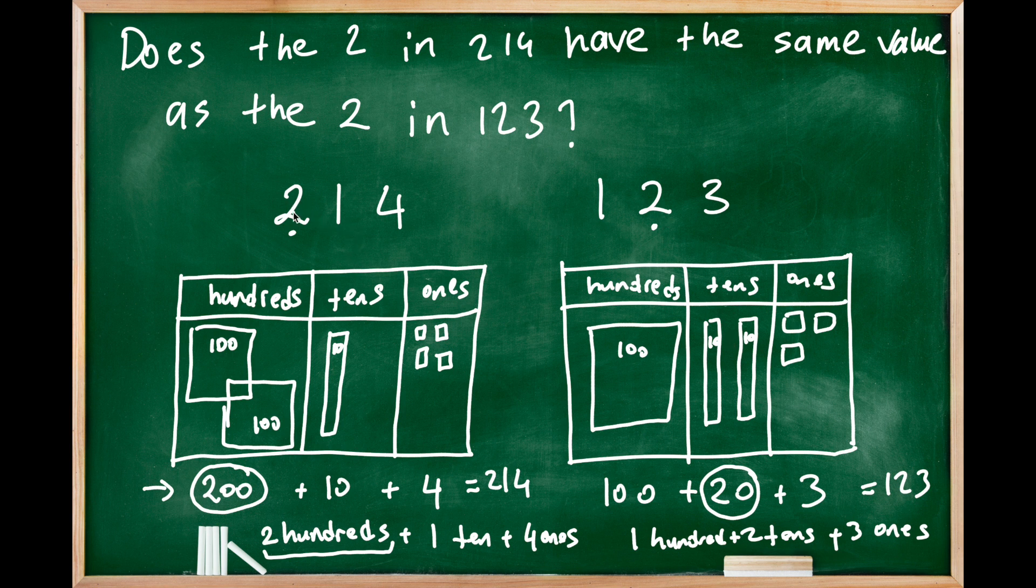So altogether, this represents 123, this represents 214. The same digit 2—in 123 it represents two tens, in 214 it represents 200. The digit values are the same, but depending on their places, they represent different values in the number.